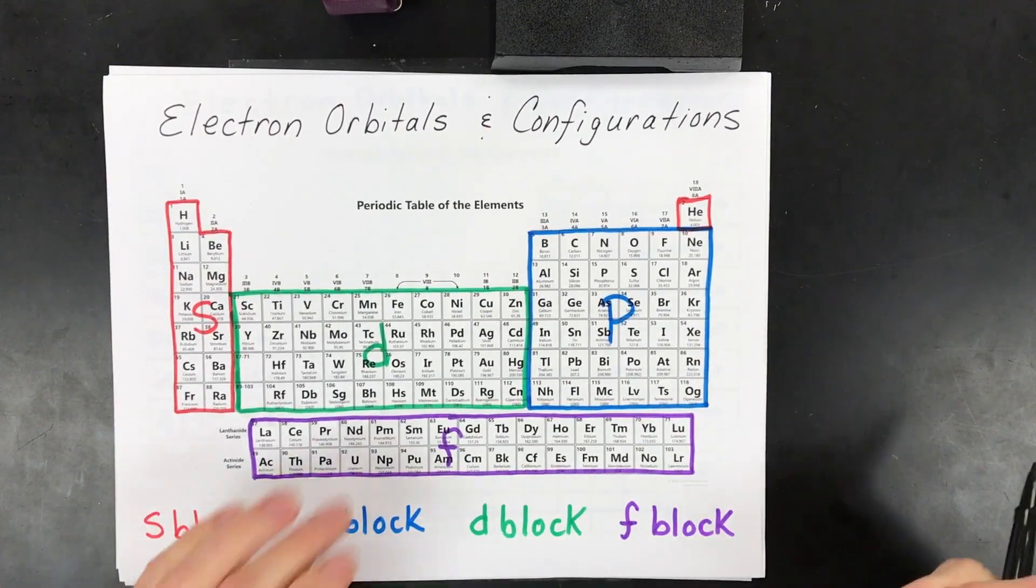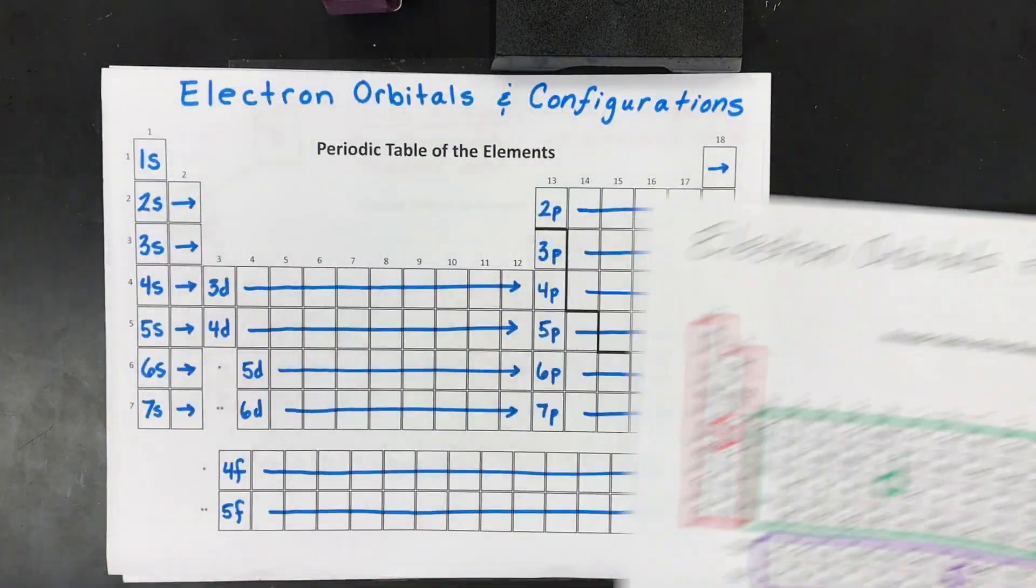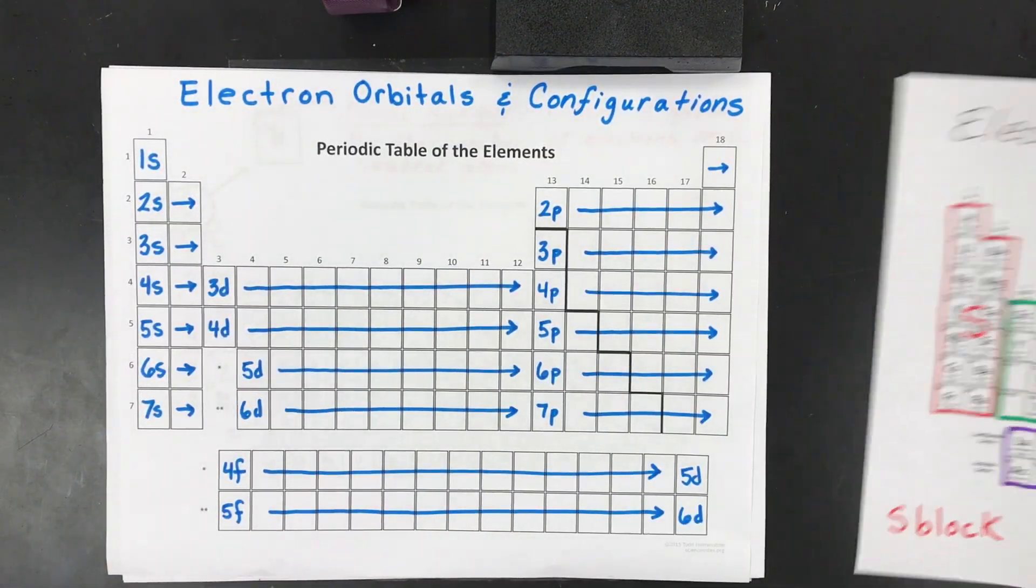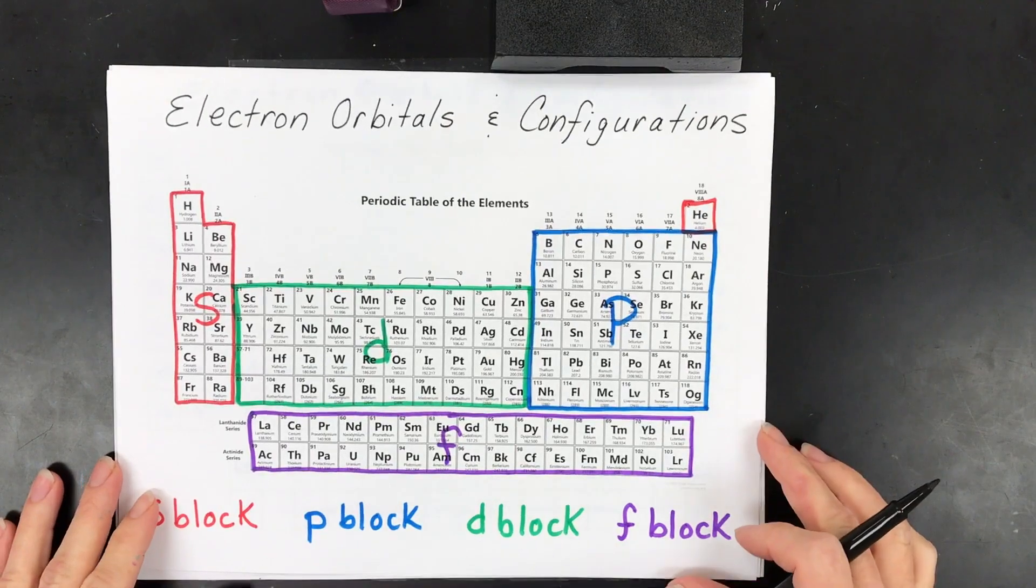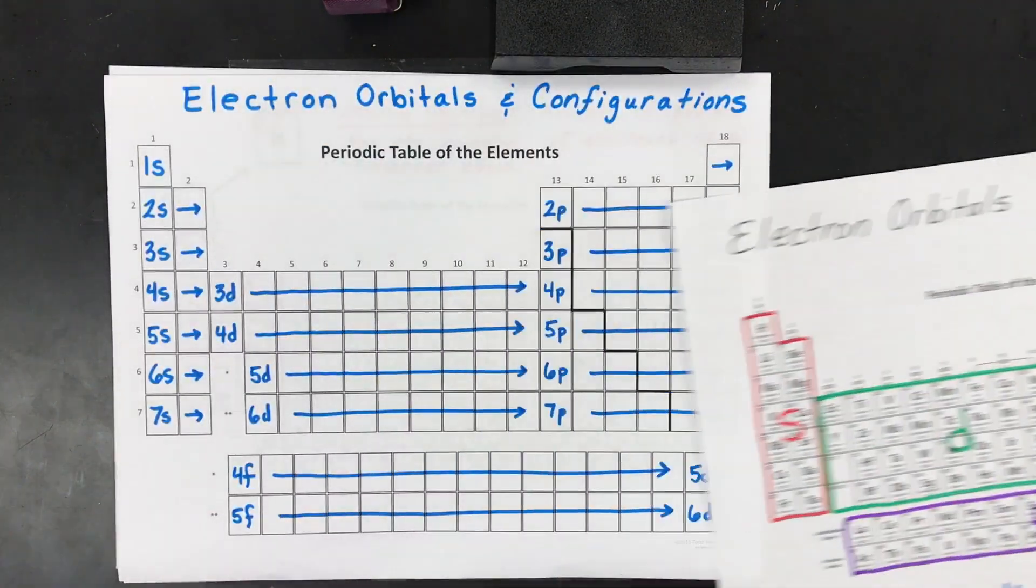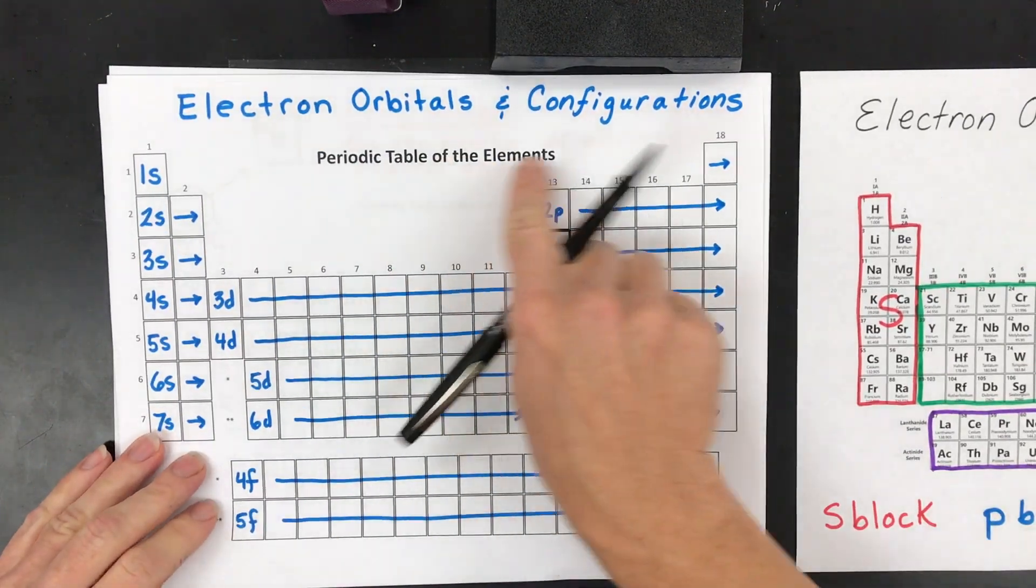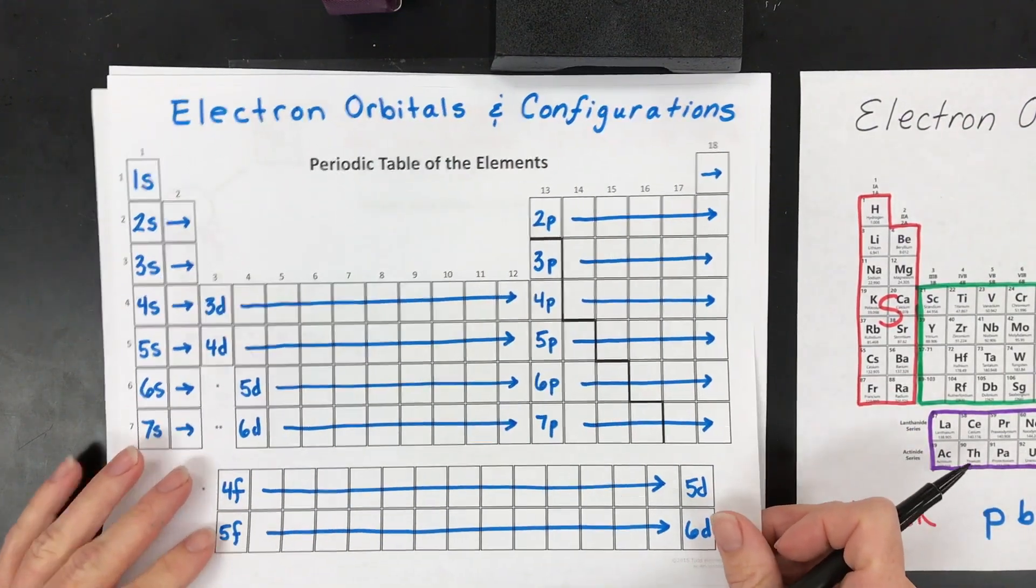You may have a table that looks like this in your book, or like this, and you may not understand how to use it. So my goal is to help you in this video understand how to use these two images that might be in your textbook to write electron configurations and orbital diagrams.